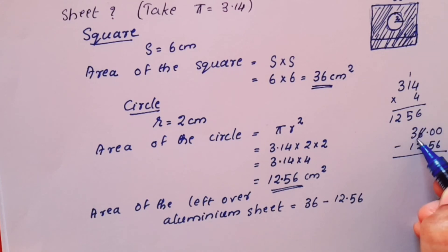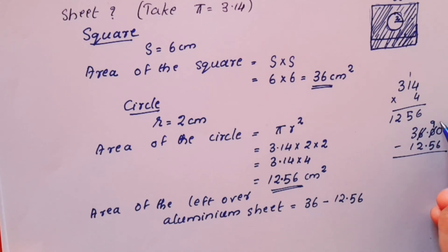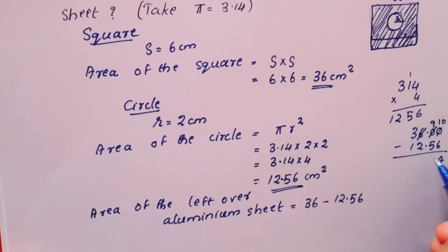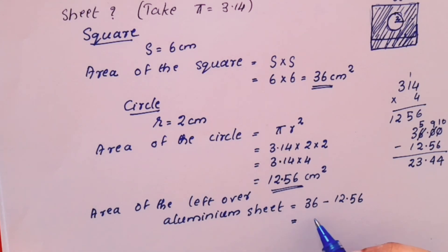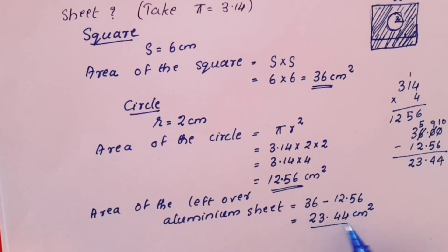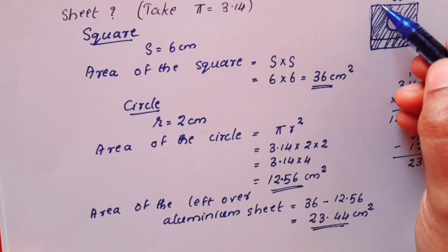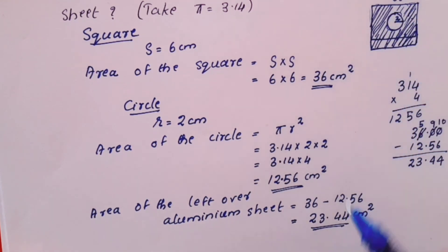Calculating: 36 minus 12.56. Working through the subtraction: the answer is 23.44 cm². The area of the leftover aluminium sheet is 23.44 cm².